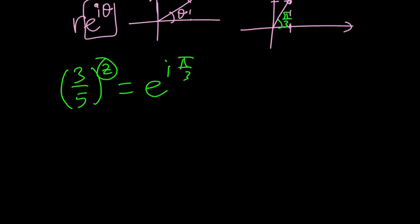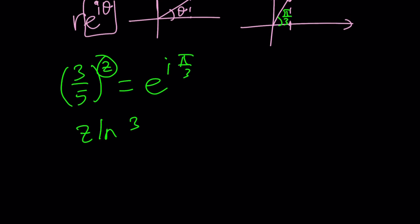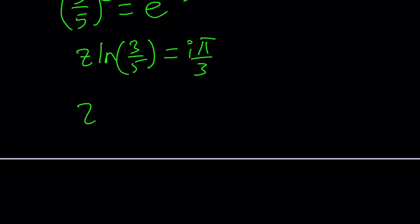So from here, we basically get Z ln 3 over 5 equals ln of this is going to be i pi over 3, right? When you ln both sides, because ln e is 1. Great. So we're going to be finding Z from here. It's going to be i pi over 3 times ln 3 over 5, whatever that number is.